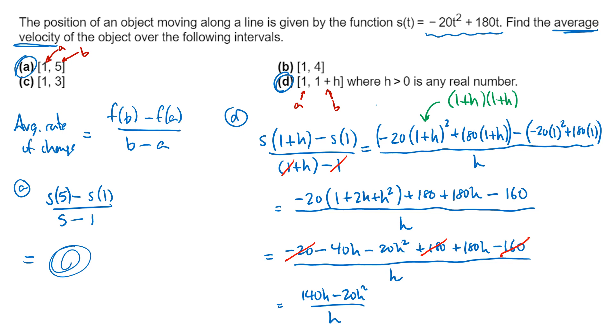And I can factor an h out of the top. So I've got 140 minus 20h, all divided by h. And now the h on the top and the h on the bottom divide out, and so I'm just left with 140 minus 20h. And again, I know I can divide out that h because I know that h is greater than 0, so I know I'm not dividing by 0. So that would be my simplified expression for a problem like this.